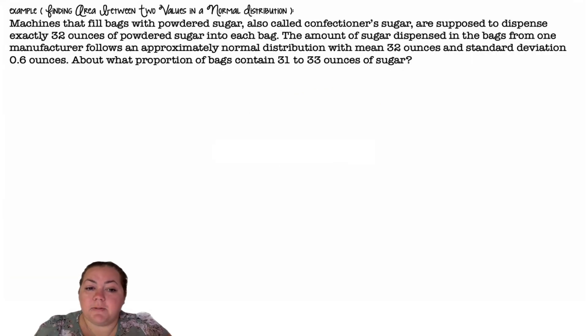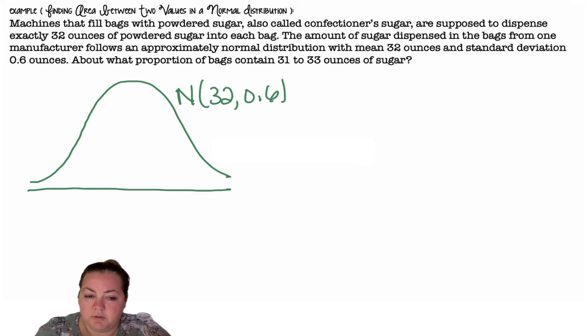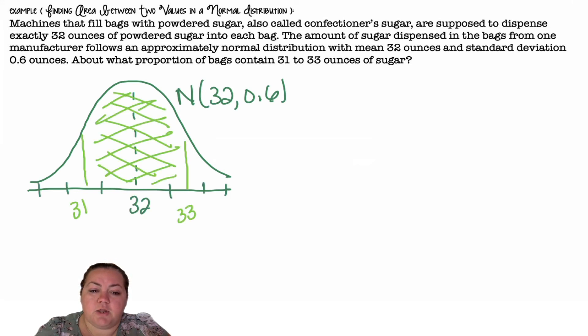Finding the area between two values in a normal distribution. So my machines that fill bags with powdered sugar, also called confectioner's sugar, are supposed to dispense exactly 32 ounces. We know that we dealt with this problem before, and the standard deviation was 0.6. About what proportion of bags contain 31 to 33 ounces of sugar. So here's my normal distribution. 32 is in the center. So we're between 31 and 33. And I want that area in between. I want to find what percent is shaded.